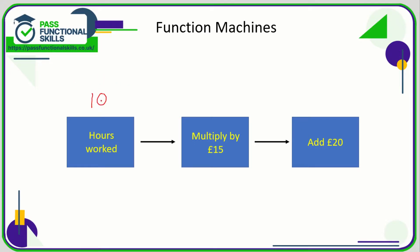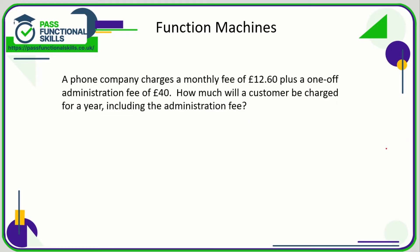So if we're inputting the number 10 — let's say 10 hours were worked — first of all we multiply that by 15. 10 times 15 is 150. Now going through the second phase of the function machine, we need to add 20 to it. 150 plus 20 gives us an output of 170. So when we put 10 in, we get 170 out the other end.